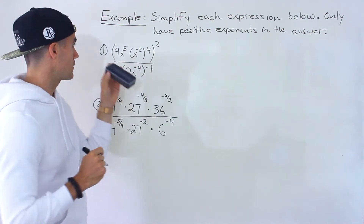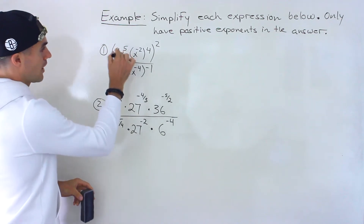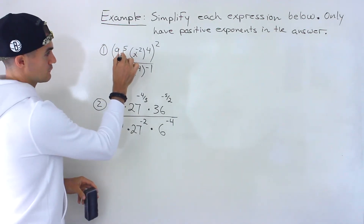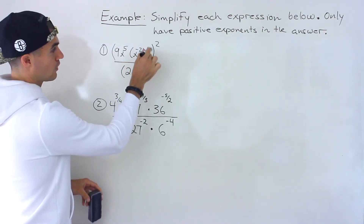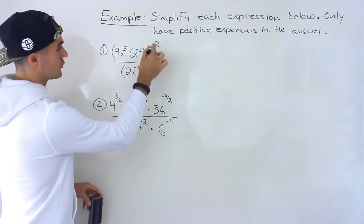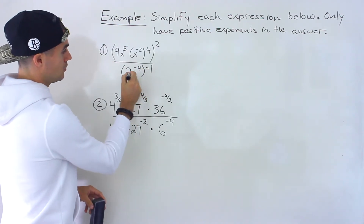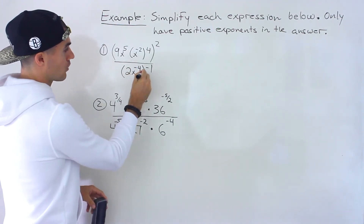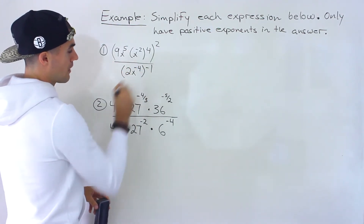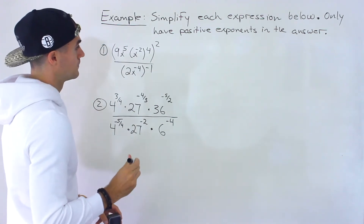Starting with number one, we have in brackets 9x to the 5, and another bracket x to the negative 2 to the power of 4, and that's all to the power of 2 — all over 2x to the negative 4, all to the power of negative 1.